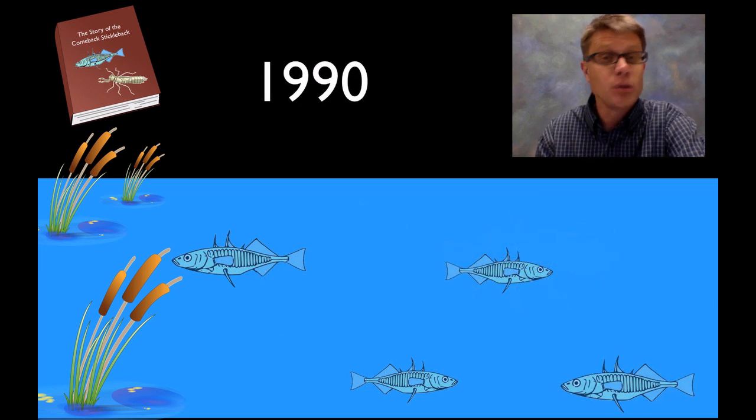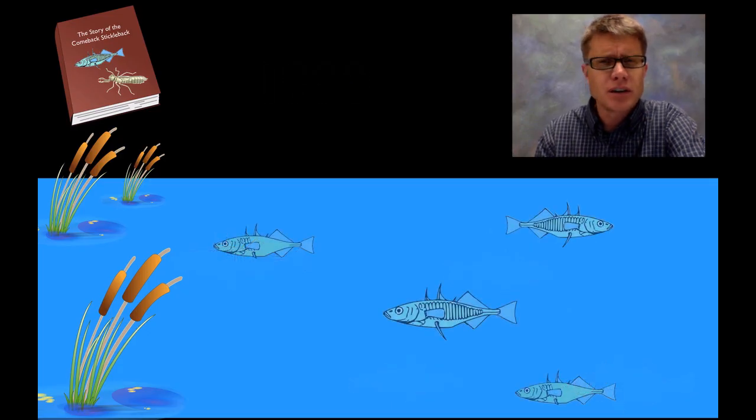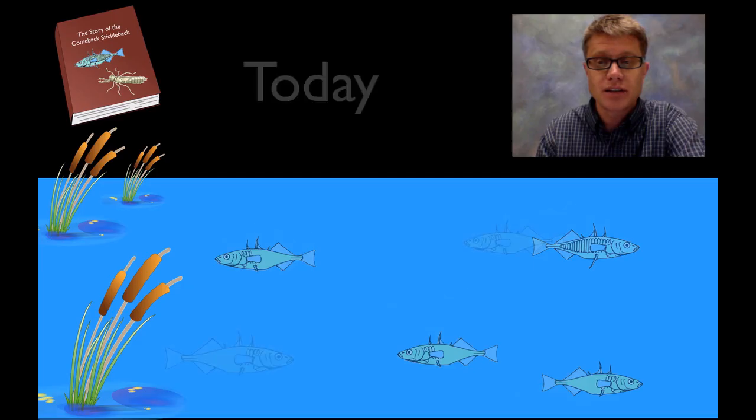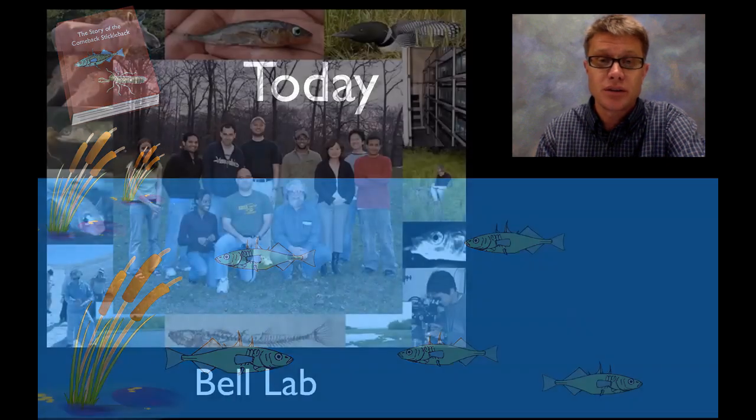So in 1990 almost all of the stickleback are going to be of this fully armored anadromous, made it from the ocean kind of a class. And so over time what the scientists start to observe is the number of those that are fully armored starts to decrease. And the number of those that are not fully armored start to increase. Or the low armored sticklebacks start to increase. Until today we have all of those sticklebacks looking like the ones that were probably originally there before the poisoning.